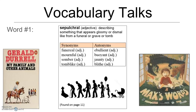A sepulchre is what's carved into or made out of stone where you place a body when entombing it or placing it in a mausoleum. If a place has the feel of one of those mausoleums — gloomy, dismal, not a happy place — you could describe it as sepulchral. For my activity for this vocabulary word, I did the synonym, the illustrated synonym, and an antonym list.